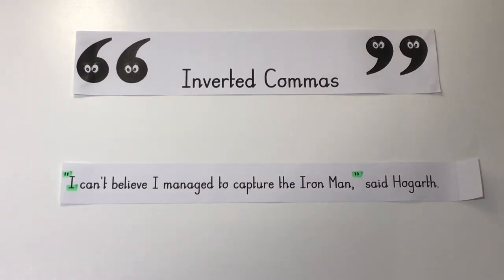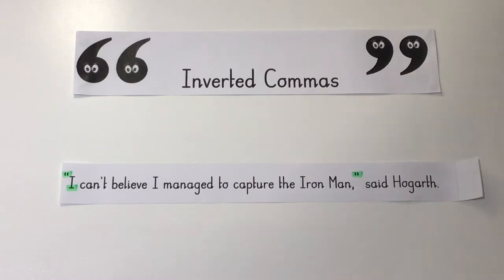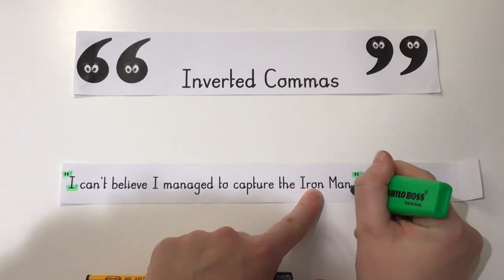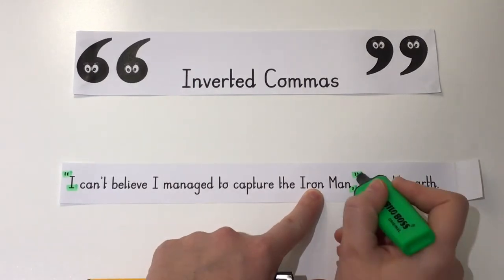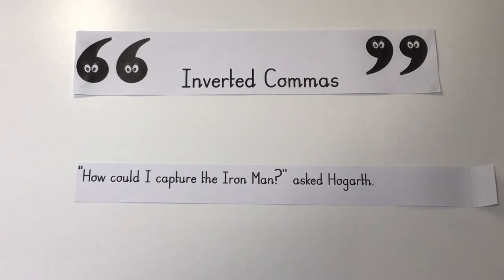Not only do we need to punctuate our direct speech with inverted commas, we also need to include punctuation before closing the inverted commas. Can you see where I've put a comma just before the closing speech marks? Commas are really important to help separate direct speech from the rest of the text. When direct speech comes before a verb, a comma needs to be used.